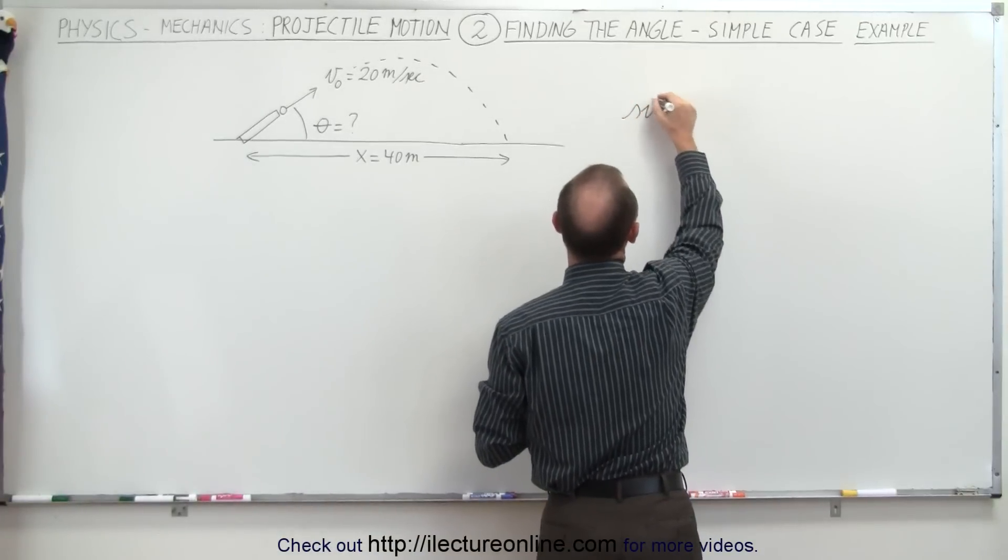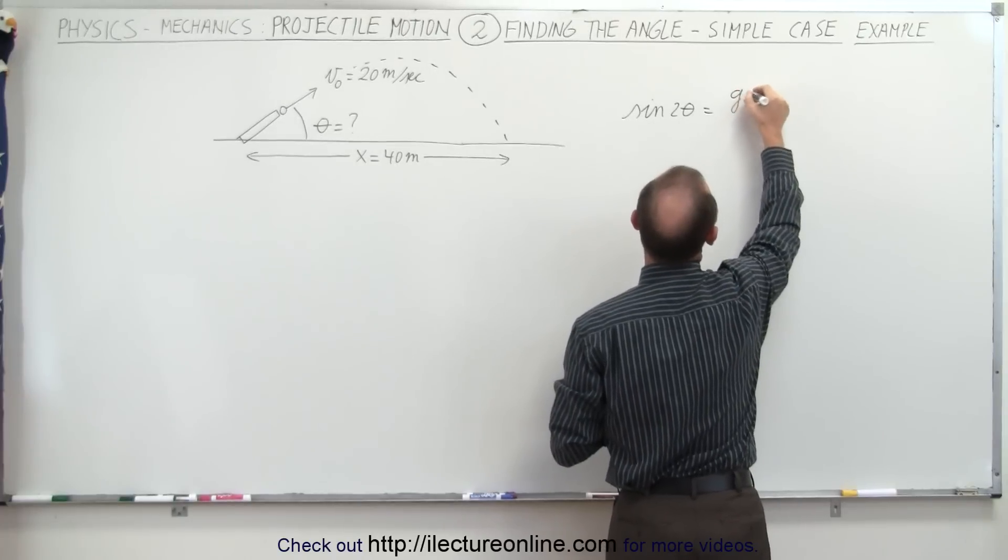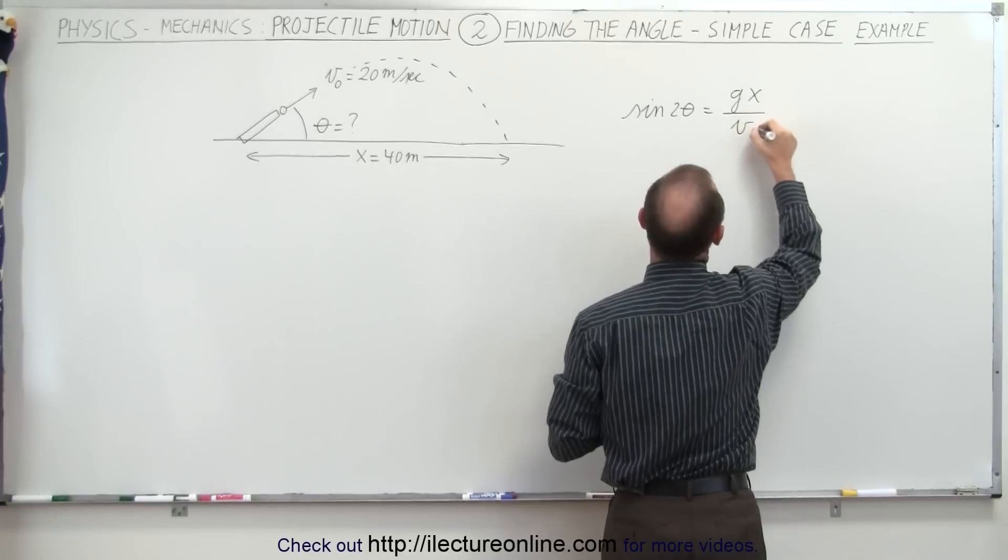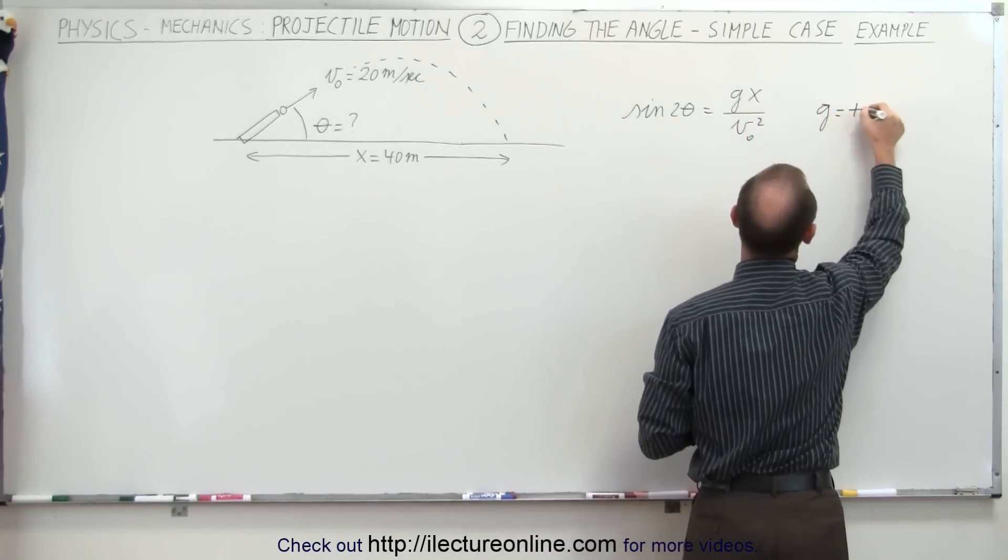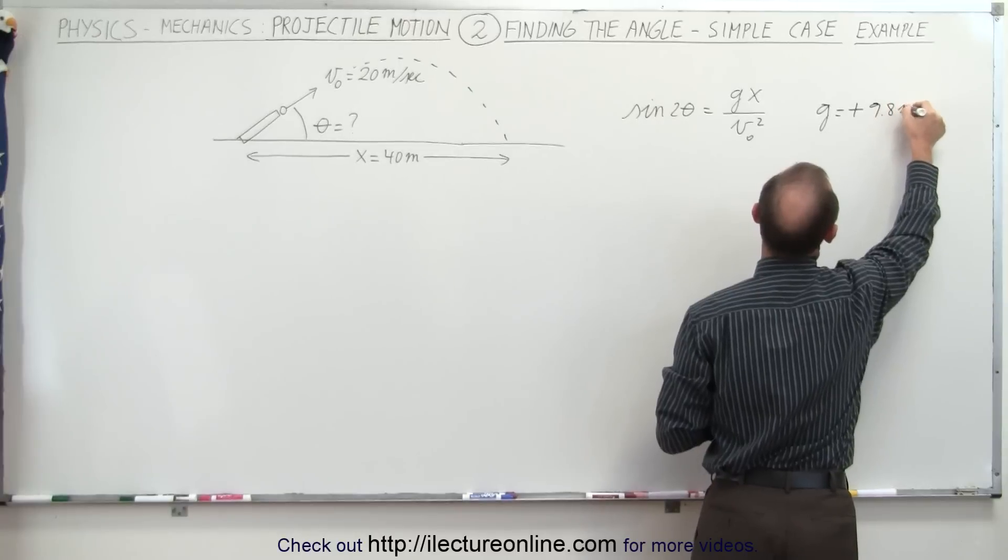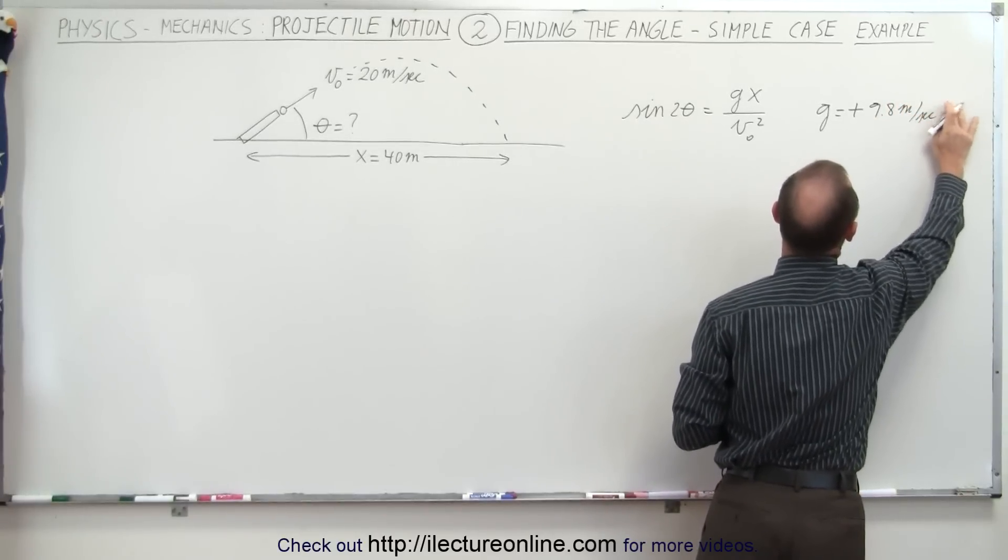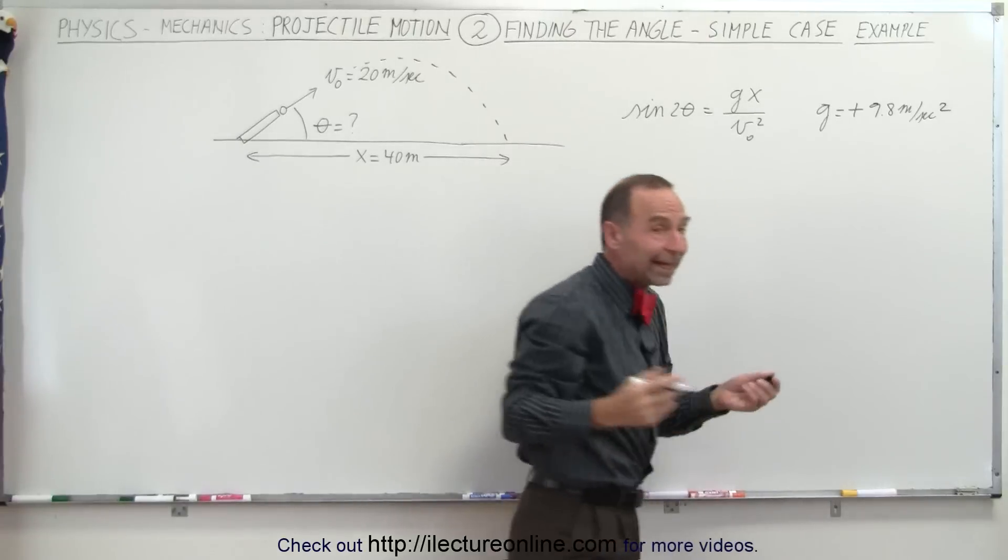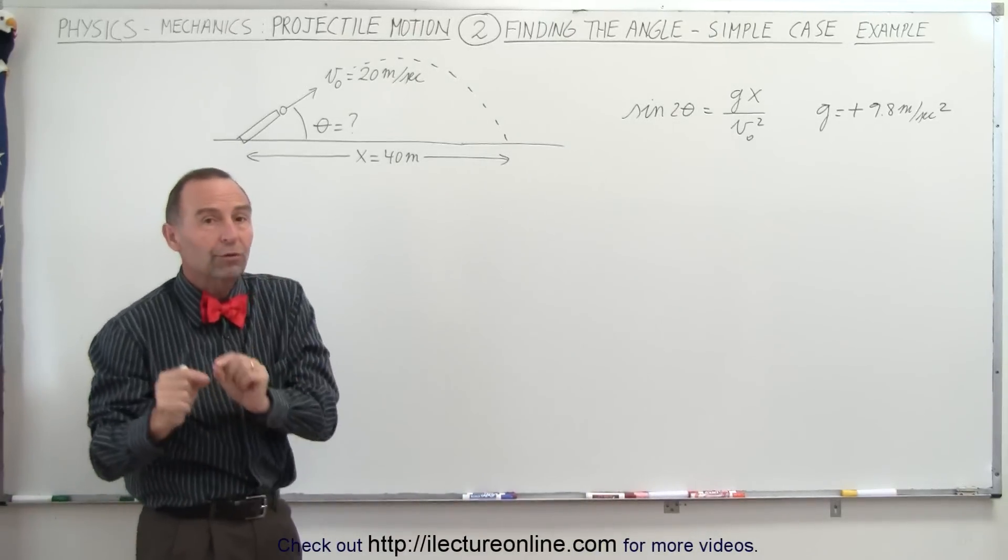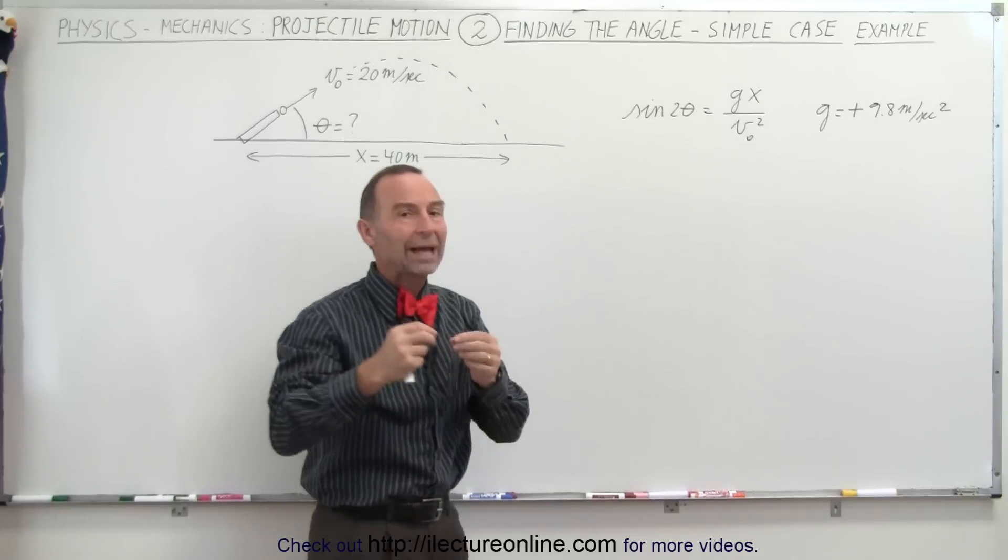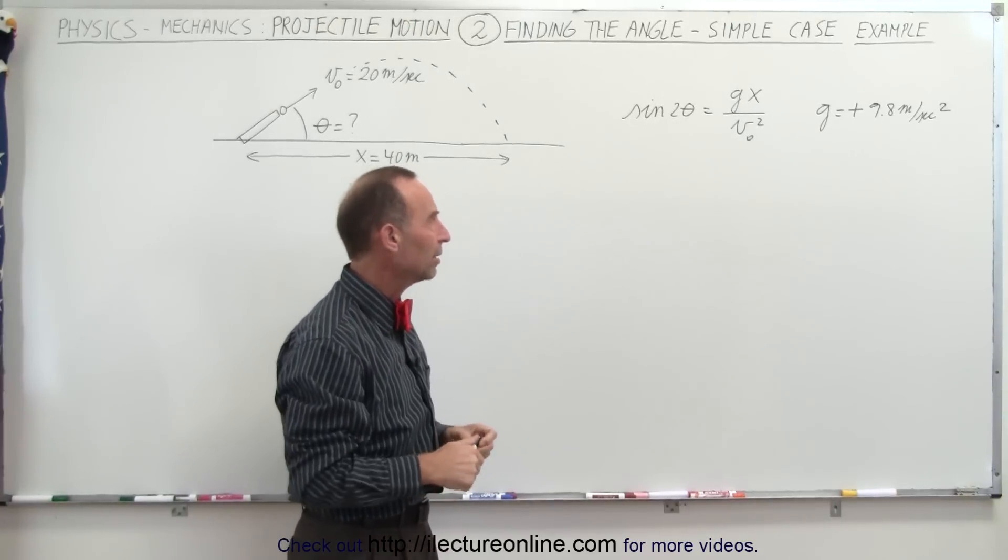The sine of 2 theta was equal to GX divided by V sub-naught squared, where G is equal to a positive 9.8 meters per second squared. Now normally in projectile motion, G is a negative 9.8 meters per second squared and that's indeed the case. But in order to find this equation, we have to already allow for the negative sign in the equation and that's what we end up with.